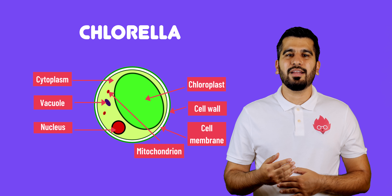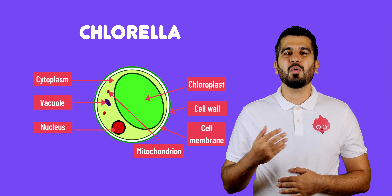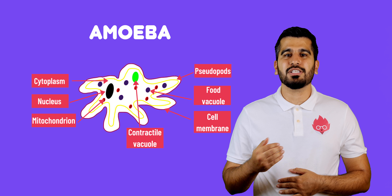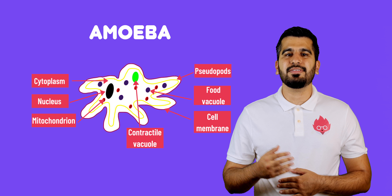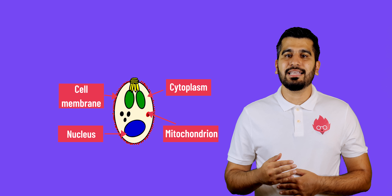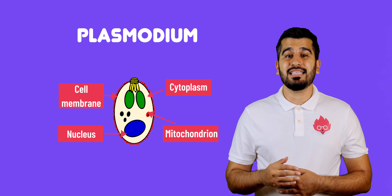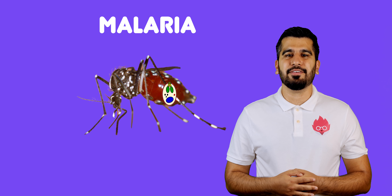Examples of protoctists you need to remember include Chlorella, which has chloroplasts and is more like a plant, and Amoeba, which is found in pond water and has features like an animal cell. A pathogenic example — one that causes disease — is Plasmodium, which is responsible for causing malaria.